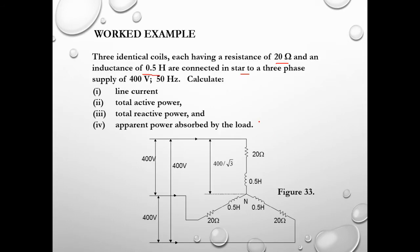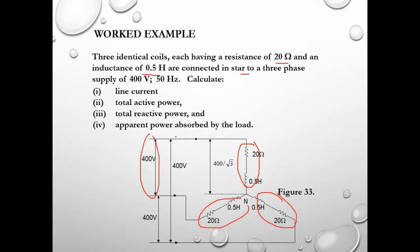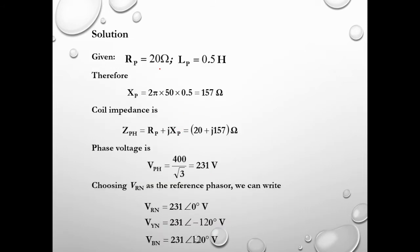We have 3 identical phase impedances. The line-to-line voltages are V_RY, V_RB, and V_YB. The phase voltage equals 400 divided by root 3. Given R equals 20 ohms and L equals 0.5 H, therefore X_L equals 2π times frequency times L, giving us 157 ohms. The coil impedance in phase is Z_p equals R_p plus jX_p, expressed in rectangular form.